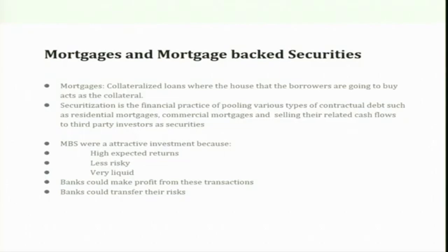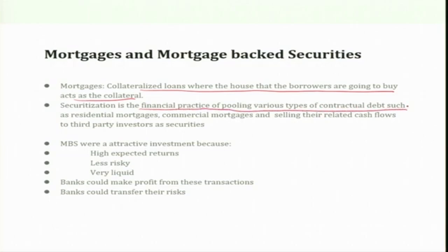Mortgages and mortgage-backed securities became a prominent feature of the US market in the 2005-2007 period. The mortgage is a collateralized loan where the house the borrower is buying acts as collateral. There was also securitization — a financial innovation and financial engineering practice of pooling various types of contractual debt, such as residential and commercial mortgages, and selling their related cash flows to third-party investors as securities, thereby generating new financial products out of residential mortgages.